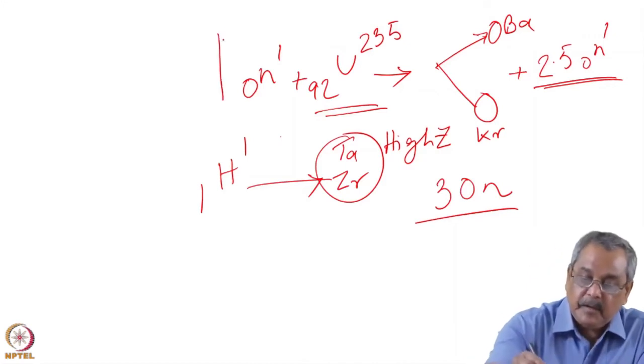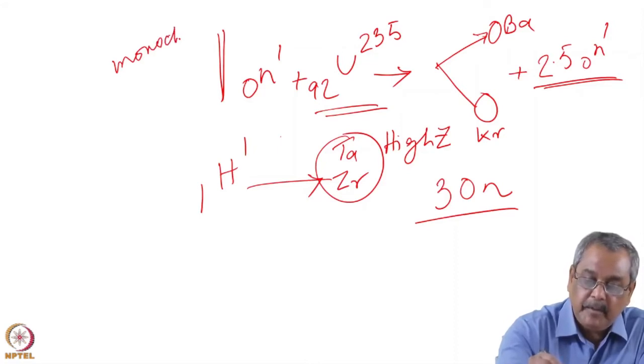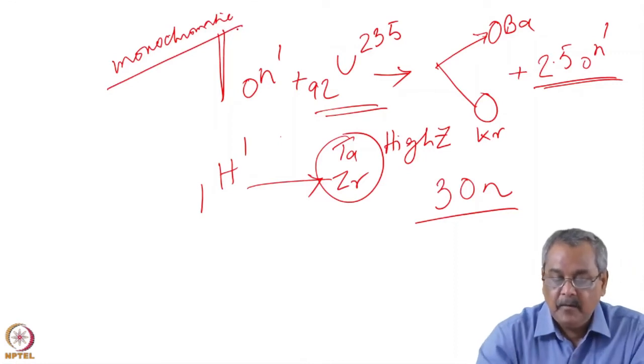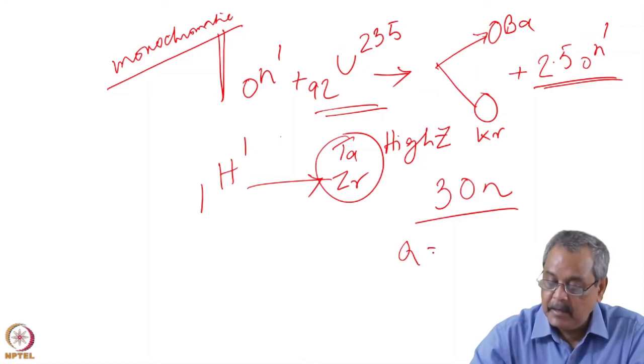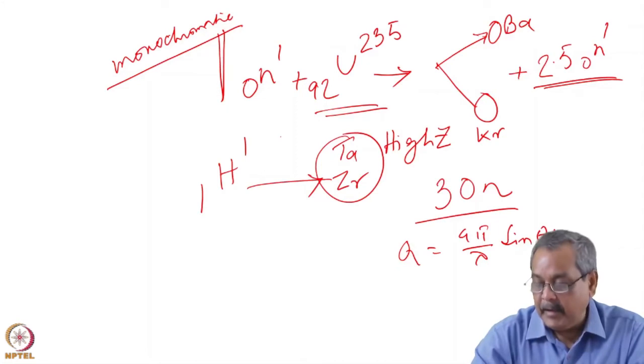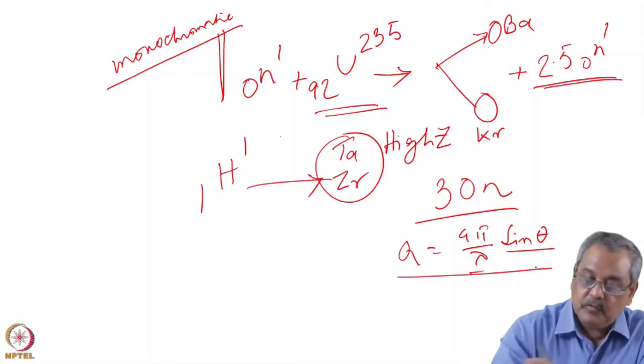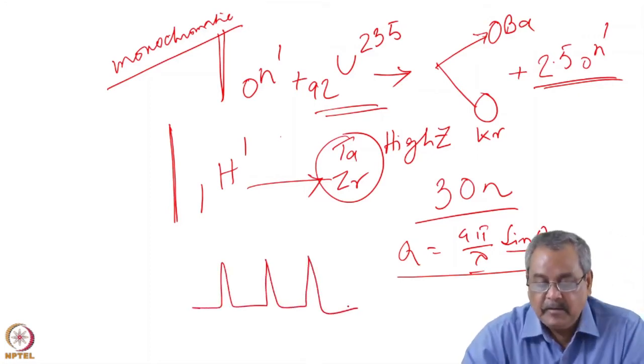But interestingly, here we use a monochromatic beam usually in a reactor and we do the momentum transfer by variation of angle with a monochromatic beam. Maybe in different settings you can change but again change the theta to get to various Q values. In a spallation neutron source, it is a pulsed source. So the neutrons are coming in pulses. Typically in pulses like 50 hertz, 20 hertz in a second.